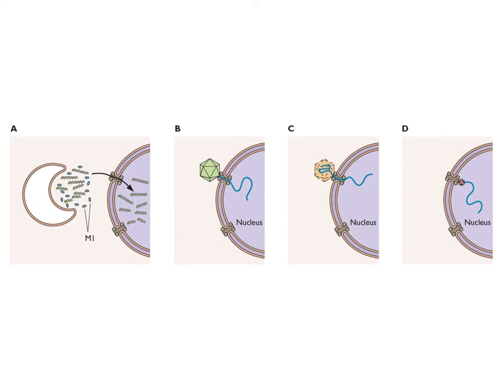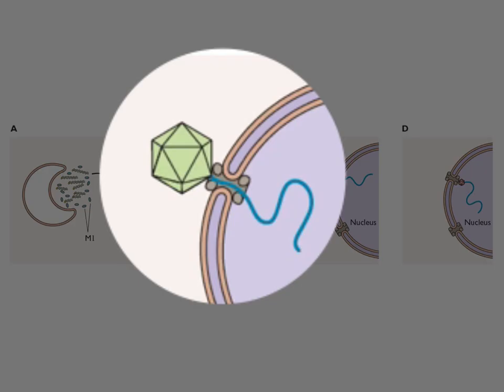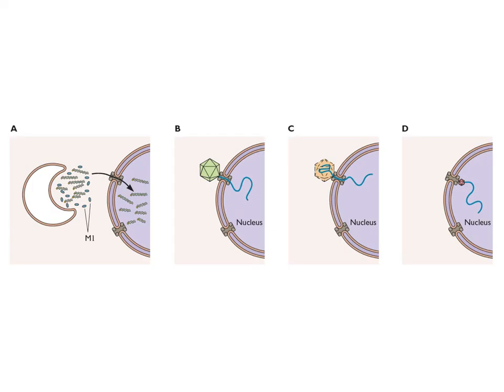Here is what herpesvirus does. Remember, we talked about the portal at one of the five-fold axes of herpesvirus last time—it's a hole through which the DNA comes. This virion is docked onto a nuclear pore and the DNA is being threaded into the nucleus. What the signal for that is, we don't know. It would be interesting to find out.